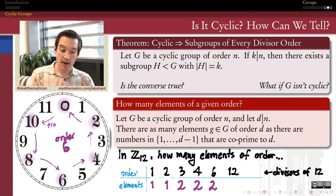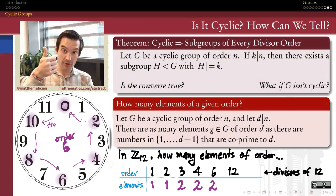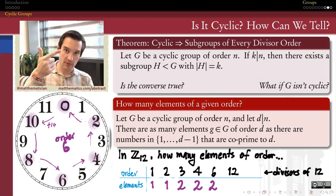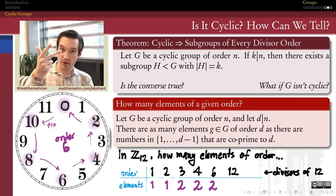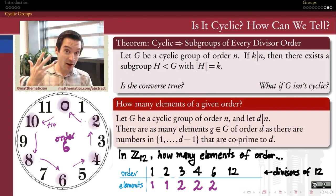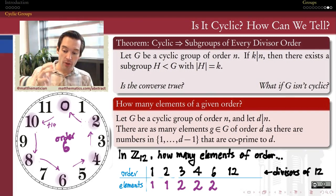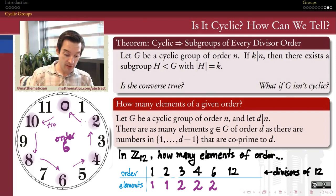What are the elements of order 12? From 1 through 11, which are co-prime to 12? 1 is co-prime, 2 is not, 3 is not, 4 is not, 5 is co-prime, 6 is not, 7 is co-prime, 8 is not, 9 is not, 10 is not, 11 is co-prime. So 1, 5, 7, and 11 are co-prime to 12 — these are exactly the elements of U12, the multiplicative group of units mod 12. That's not a coincidence. So we expect four elements of order 12 inside Z mod 12.